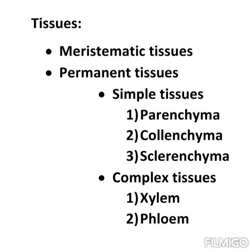To summarize: there are two types of tissues — meristematic tissue and permanent tissue. Permanent tissue is divided into simple tissue and complex tissue. Simple tissues include parenchyma, colenchyma, and sclerenchyma. Complex tissues are xylem and phloem.